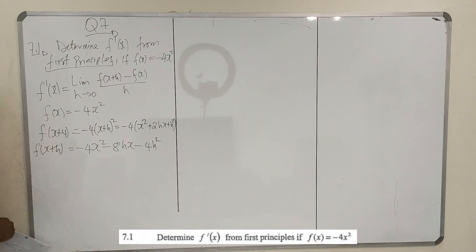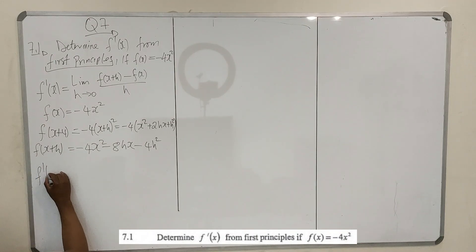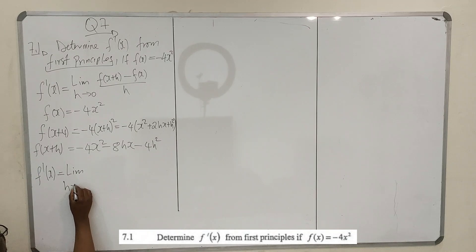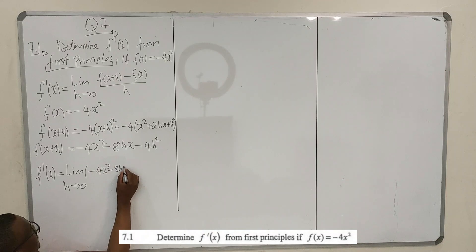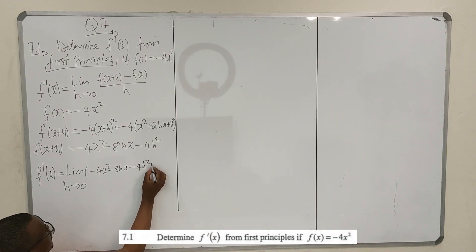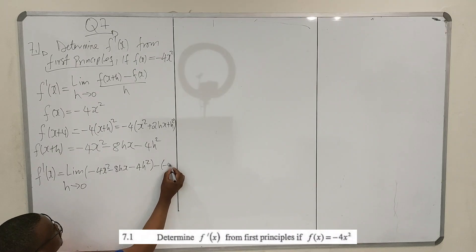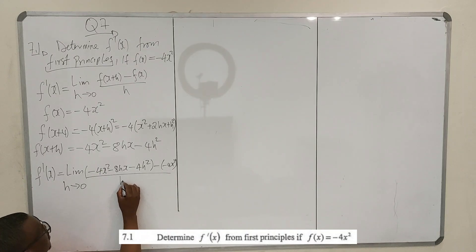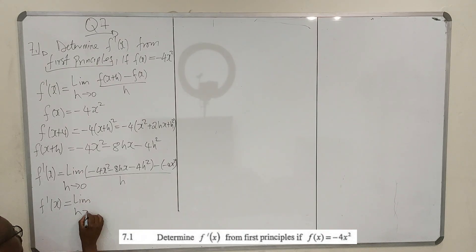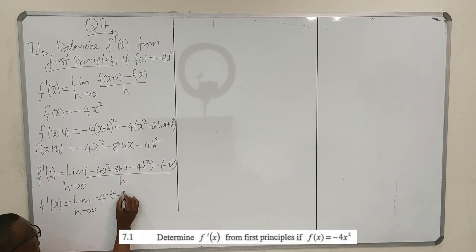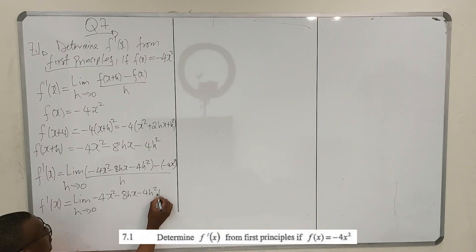Now we apply our definition. The derivative of f at x is equal to the limit as h goes to 0 of f of x plus h minus f of x, all over h. So we substitute: that's minus 4x squared minus 8hx minus 4h squared, minus the original f of x which is minus 4x squared, all divided by h.